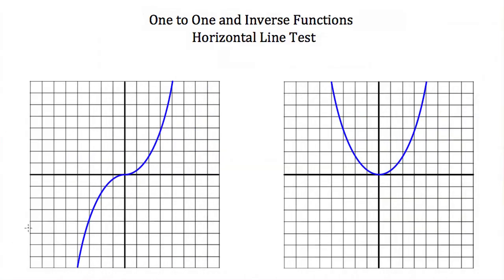There's a similar method for testing if a function is one-to-one — that's the horizontal line test. Given the graph of two different functions, I draw a horizontal line. If this horizontal line intersects the graph of our function in only one place, then this is a one-to-one function. If it intersects in more than one place, then it is not a one-to-one function.